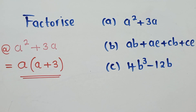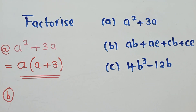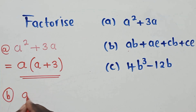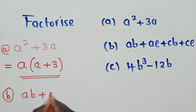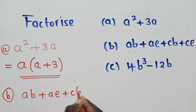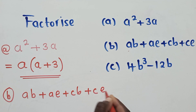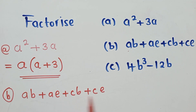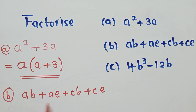Now let's work out question B. We have ab + ae + cb + ce. We check if anything is common across all four terms — nothing is common to all of them. So in this case we are going to factorize by grouping.